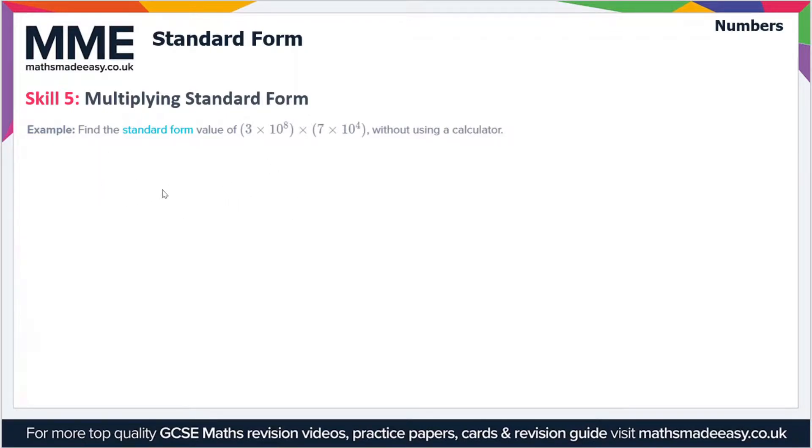Let's start by reordering things, so we've got 3×7 times 10⁸×10⁴. We can put brackets in if we like just to make it clear what's going on. But 3×7 is obviously just equal to 21.